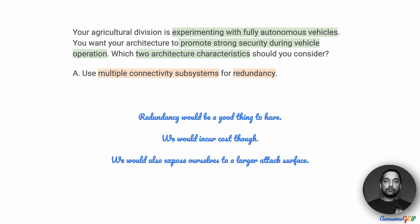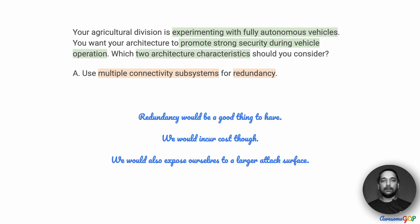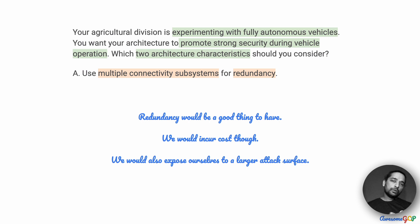Option A suggests using multiple connectivity subsystems for redundancy. Redundancy is a good thing to have — if any system fails, we'd like to have a backup. For example, if a vehicle had a SIM card connection to a local tower and that connection was broken, there could be problems. So perhaps a secondary connection using Wi-Fi to a local area network in that region would help. The downside of redundancy is extra cost, though that isn't a major issue here since cost-effectiveness hasn't been mentioned.